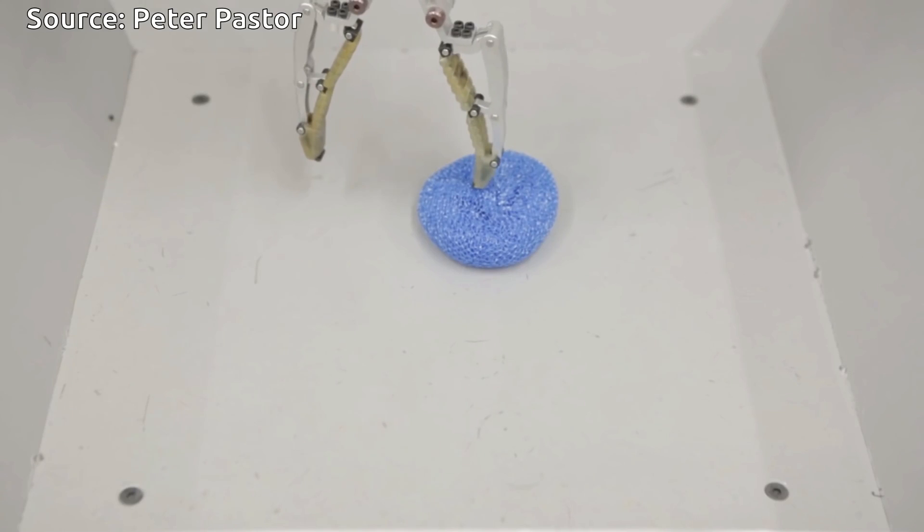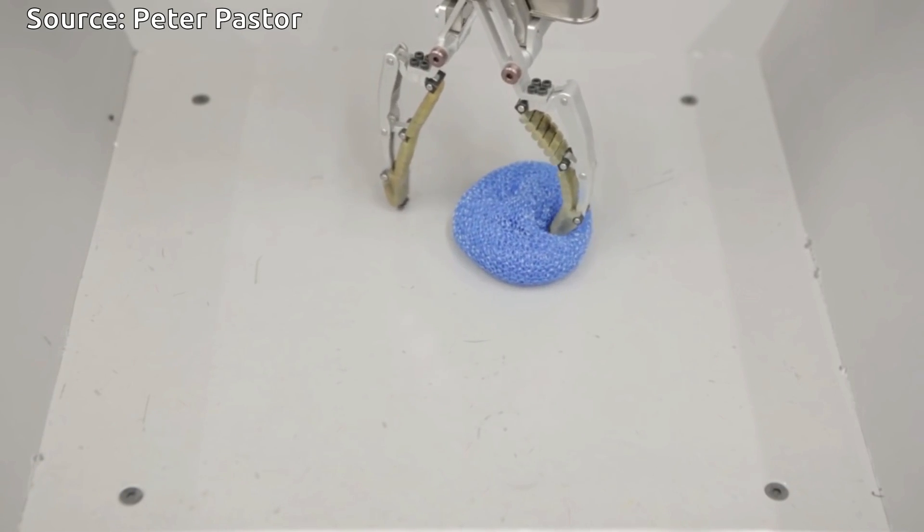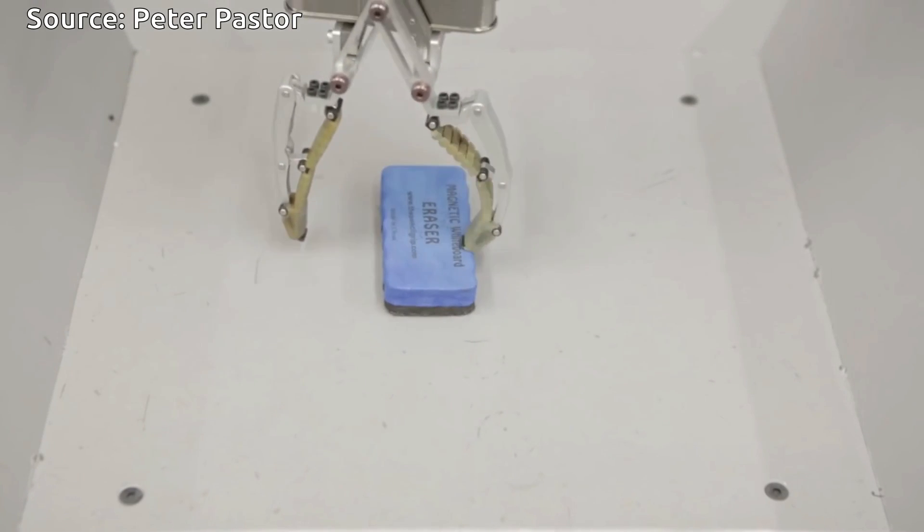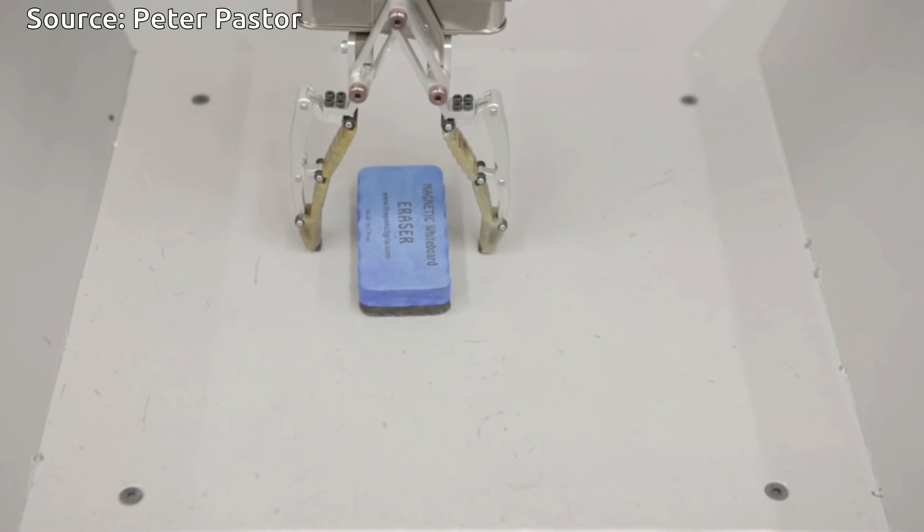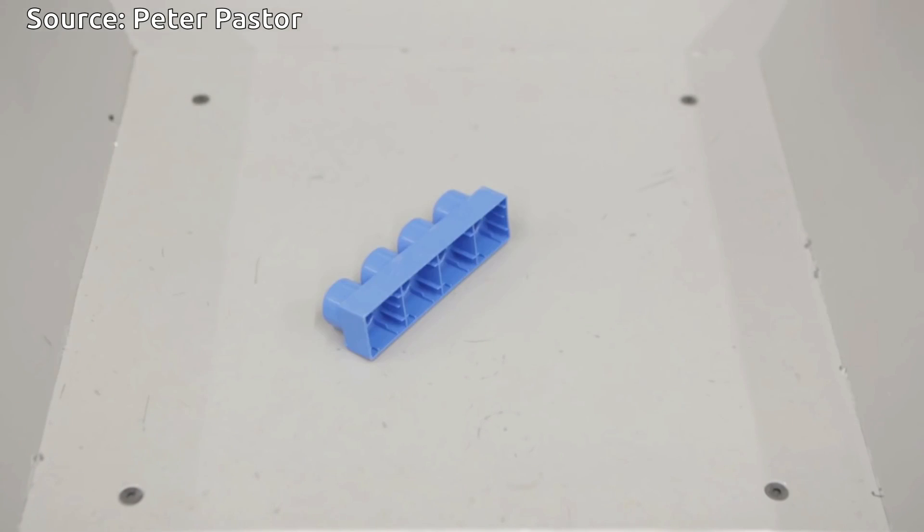However, introducing actions and control adds considerable new challenges, since every decision the network makes will affect what it sees next. Overcoming these challenges will bring us closer to building systems that understand the effects of their actions in the world.